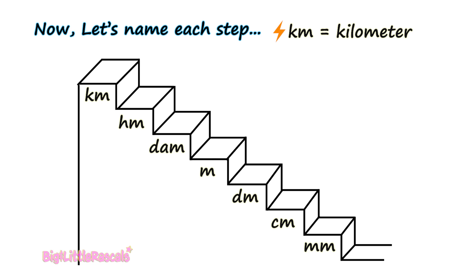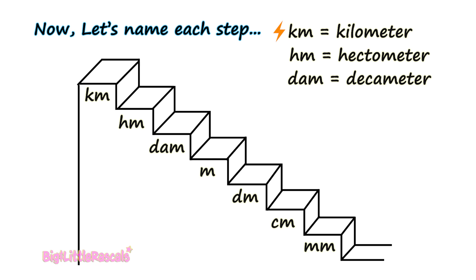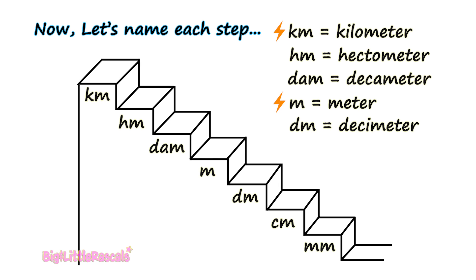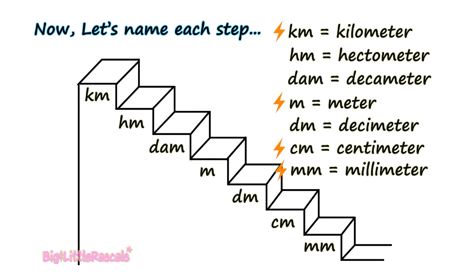Let's name each of the steps. First, Km, short form for kilometer. Second, Hm, short for hectometer. Third, Dam, short for decameter. Fourth, M for meter. Fifth, Dm for decimeter. Sixth, Cm for centimeter. Seven, mm for millimeter.